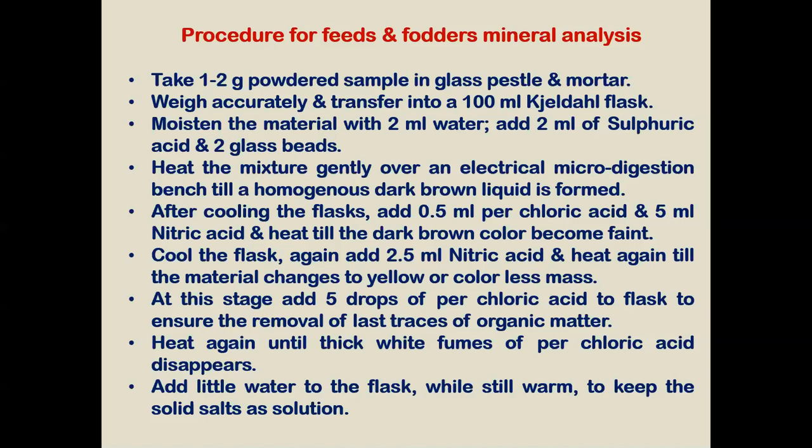Heat the sample until the dark brown color becomes faint. Again cool it, and then add 2.5 ml of perchloric acid and heat it again until the material changes to yellow. At this stage, add 5 ml of perchloric acid to the flask to ensure the removal of the last traces of organic matter. Heat again until thick white fumes of sulfuric acid appear.